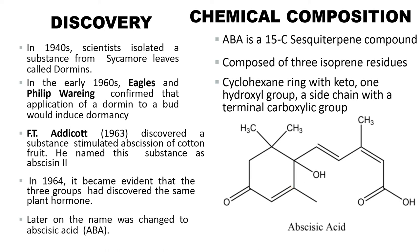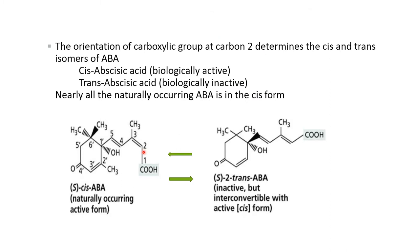With a terminal carboxylic acid, the orientation of the carboxylic group at carbon 2 determines the cis or trans isomers of abscisic acid. Cis-abscisic acid is biologically active whereas trans-abscisic acid is biologically inactive.